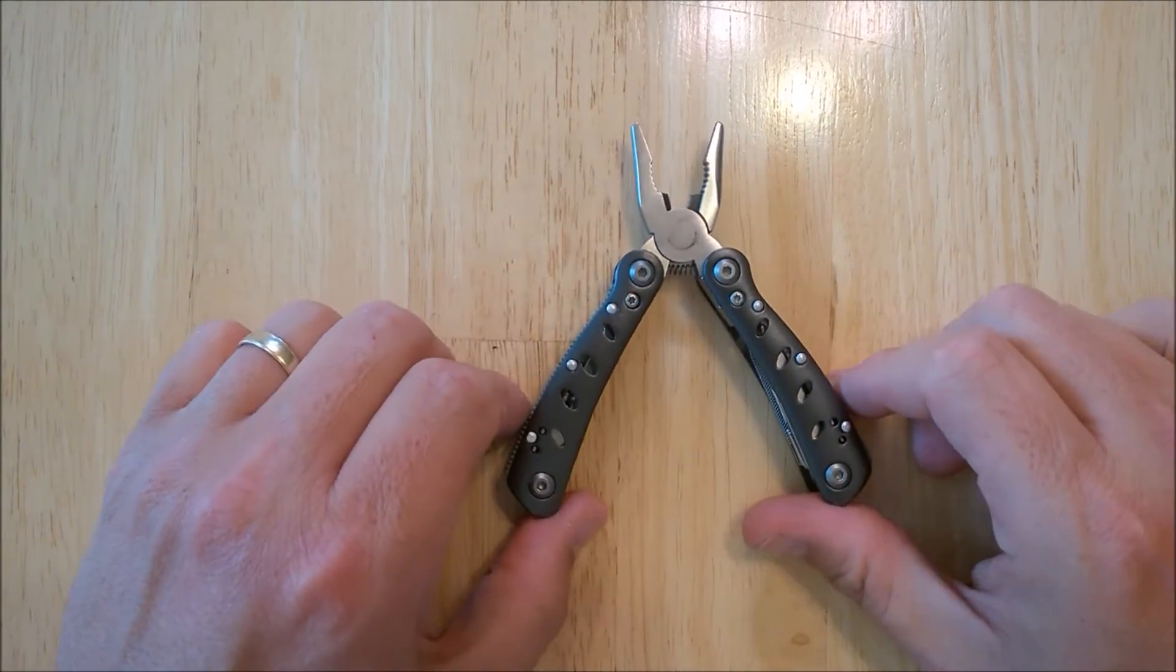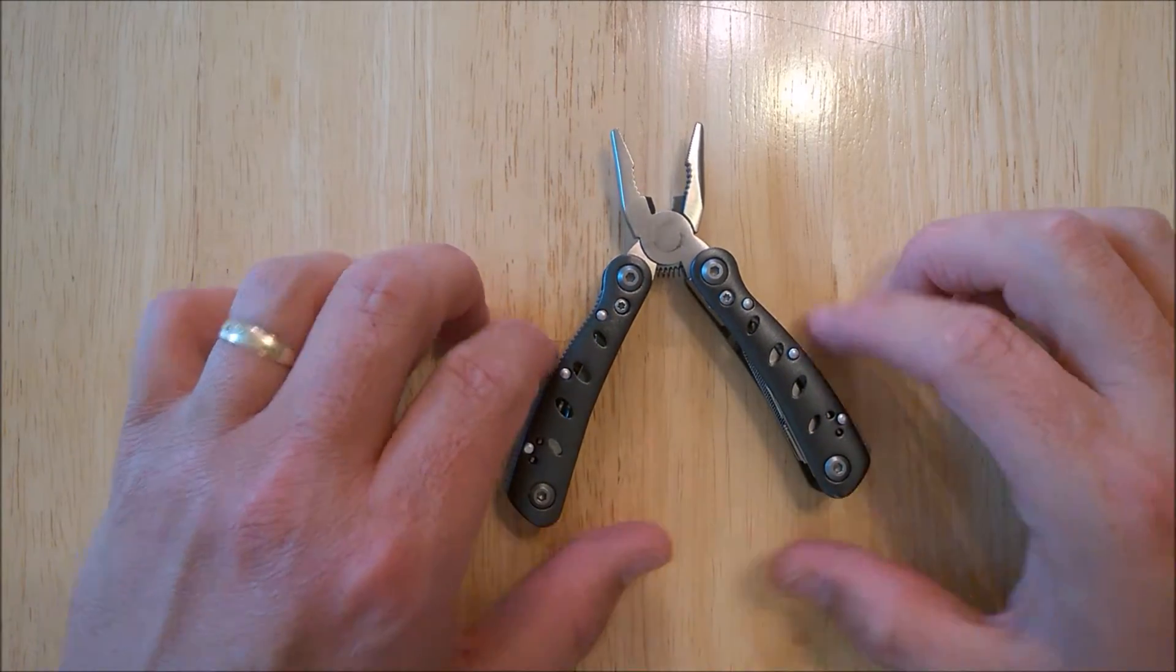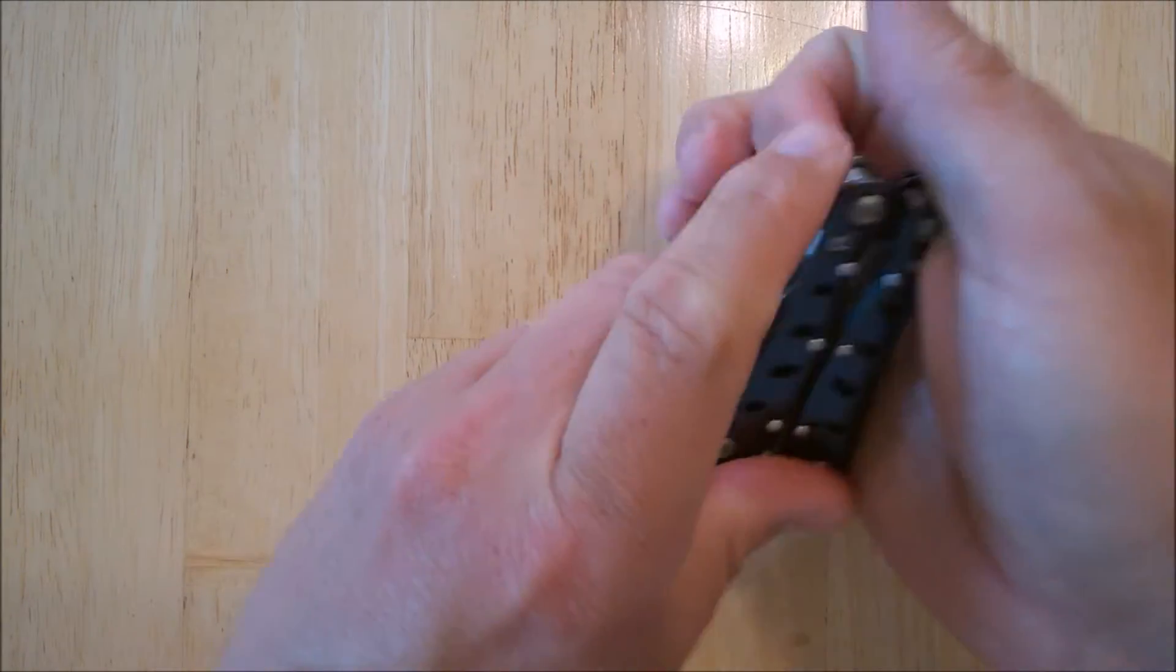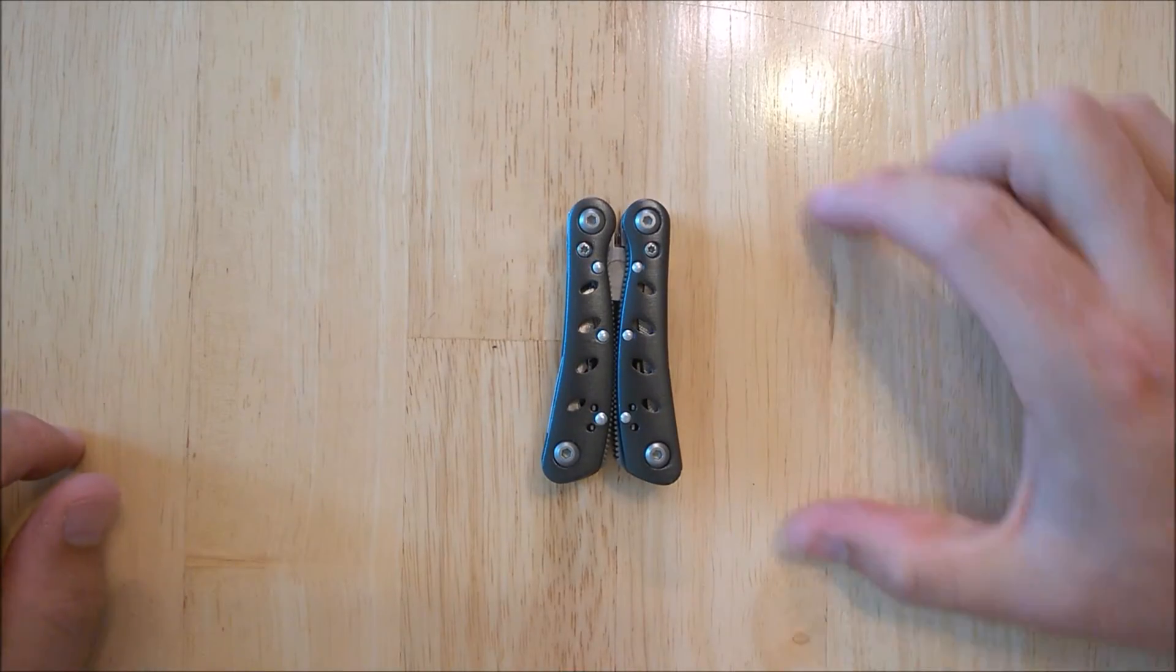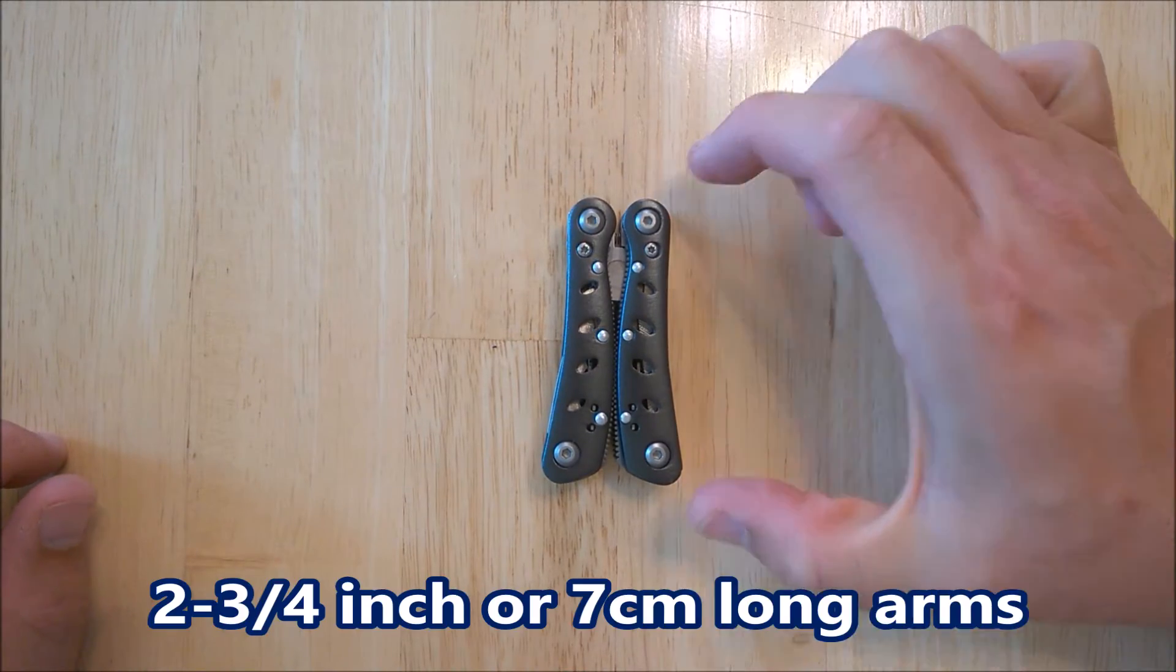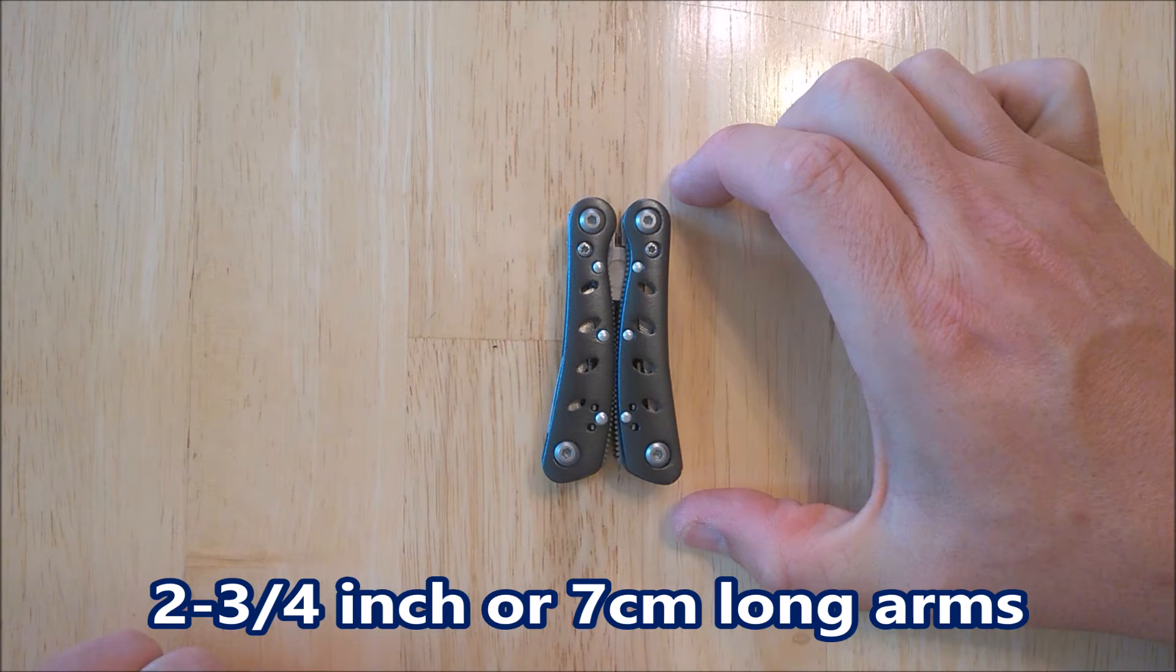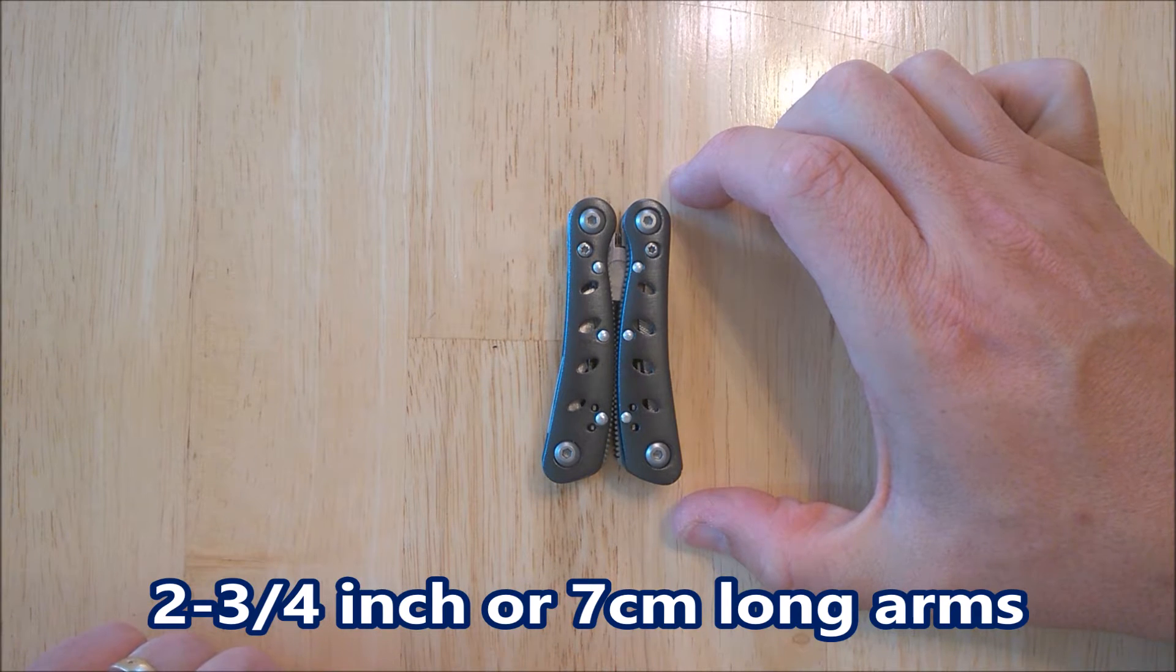All right. So let's talk about the size of this unit first. I'm going to close it up and we'll talk about it this way. We've got two and three quarter inches in the length of each arm. That's about seven centimeters.